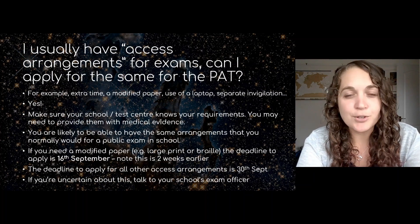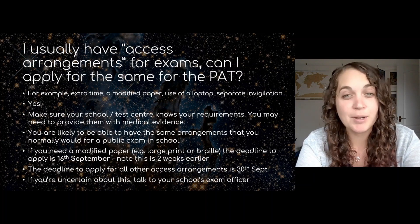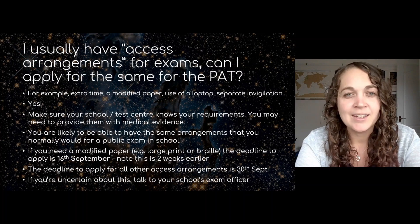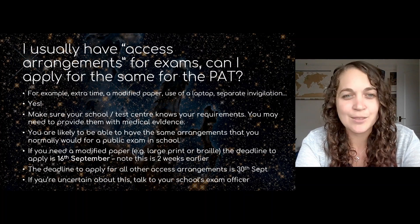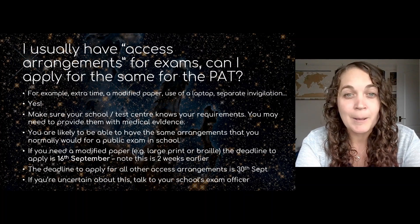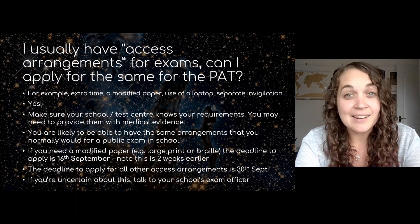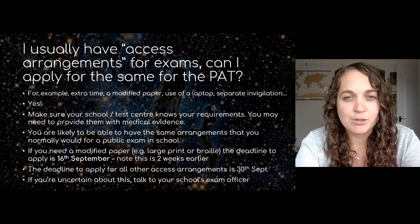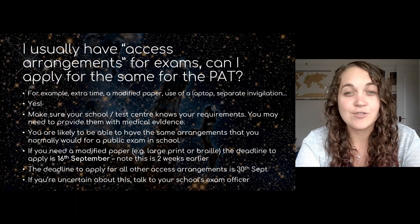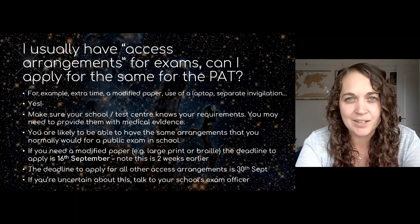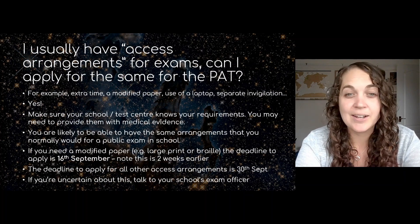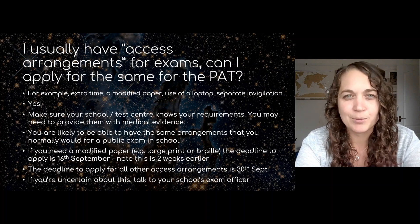If you need a modified paper — for example a large print paper or a Braille paper — the deadline to apply for that is the 16th of September. Note, again, this is two weeks earlier than it might usually have been. The deadline to apply for all other access arrangements, such as extra time, is the 30th of September — the same deadline as registering for the exam. If you're uncertain about any of this, talk to your school's exams officer and they should be able to help.